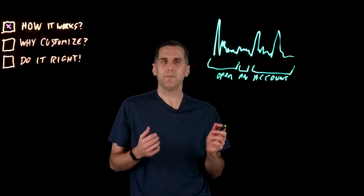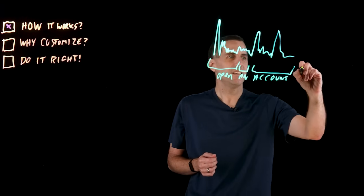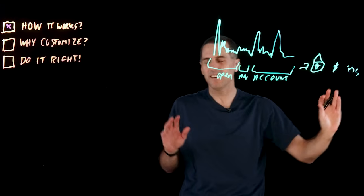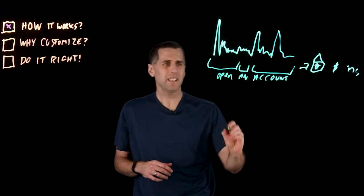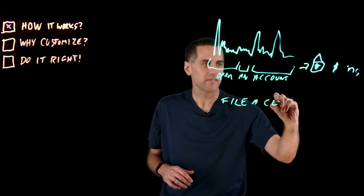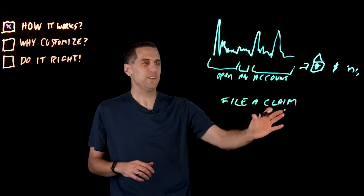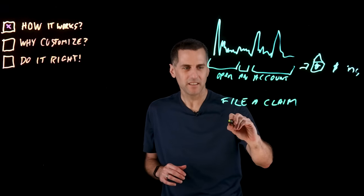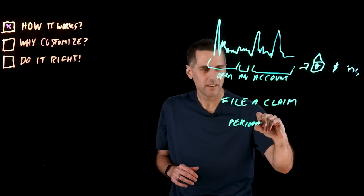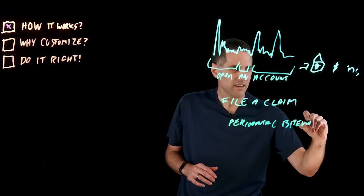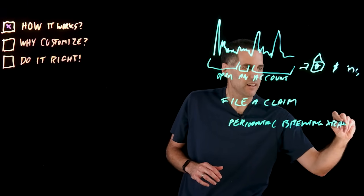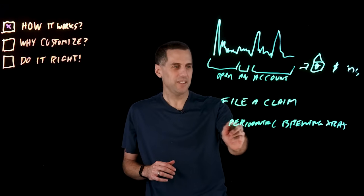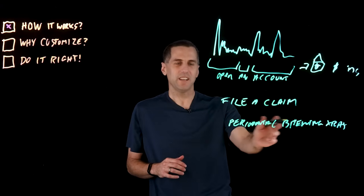These models are very good at common phrases. 'Open an account' happens in banking, retail, insurance, and lots of different places — everyone's opening accounts. Something in the middle is perhaps 'file a claim' — it's a phrase that a lot of different domains have, and there's still pretty good context there. But sometimes you have completely domain-specific things like 'periodontal bitewing x-ray.' This is a phrase you'll only see at the dentist's office.